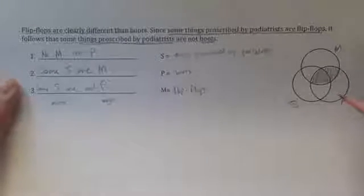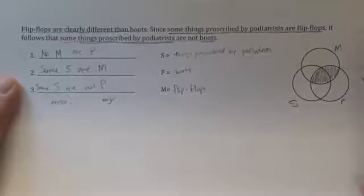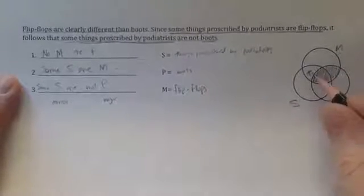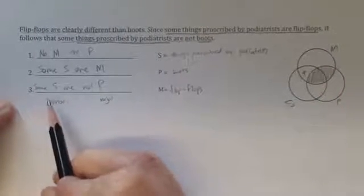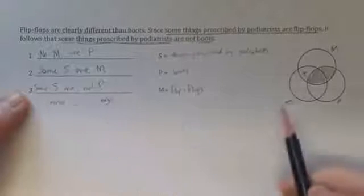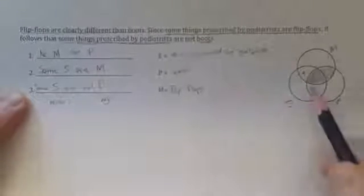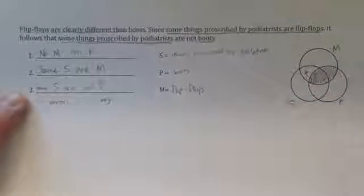And then I diagram my particular premise, premise 2, which says that some S are M. So there's at least one S that is an M. And then I check to see whether my conclusion, the information expressed in the conclusion, is depicted in the diagram. And it says some S are not P. And in fact, that is exactly what the diagram depicts. So this is a valid argument.